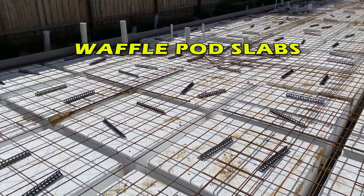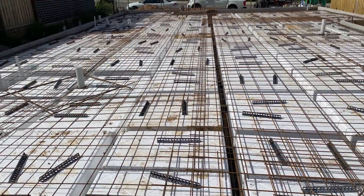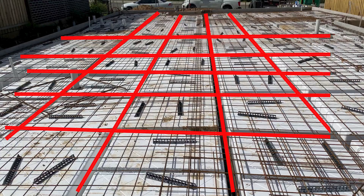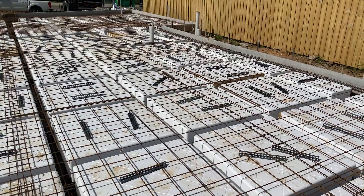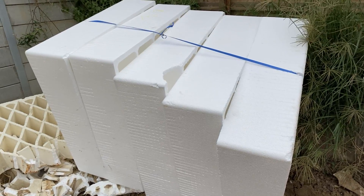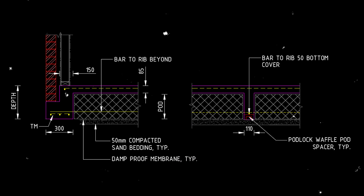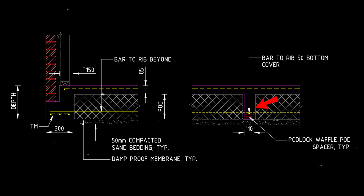Next, we have the waffle pod slab. This system consists of a grid of relatively narrow reinforced concrete beams formed entirely above the ground using styrofoam boxes as formwork. The height of the boxes varies from 225 mm to 375 mm depending on the soil reactivity of the site. The slab is generally 85 mm thick reinforced with steel mesh, and the internal ground beams — called ribs — are generally 110 mm wide. The waffle pod footing system is cheaper compared to the conventional raft slab because it uses a reduced amount of concrete and steel and requires little to no excavation.